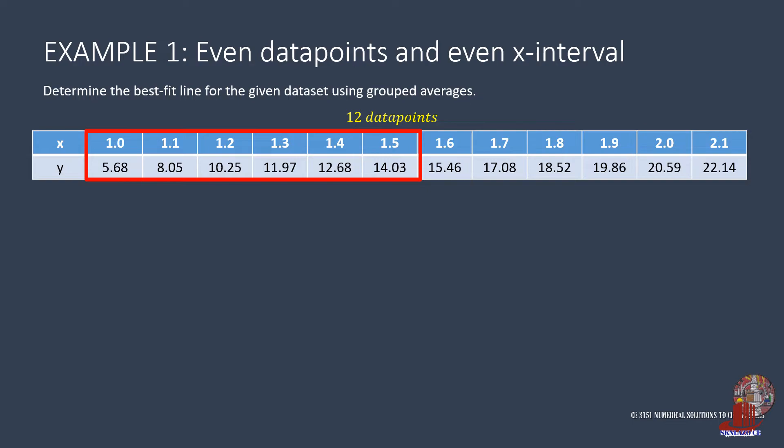The first group has x equal to 1 until 1.5. The second group is from 1.6 to 2.1.